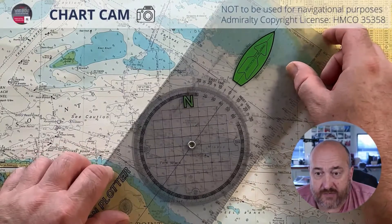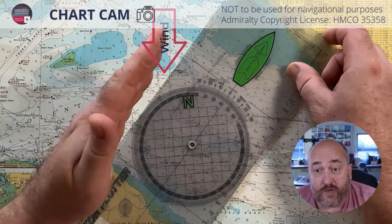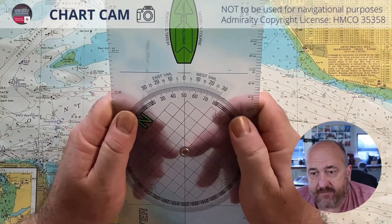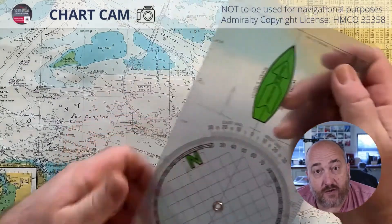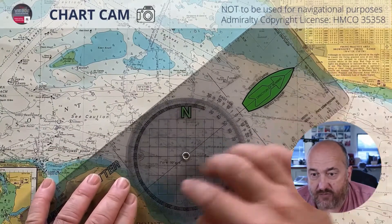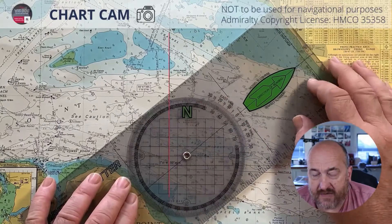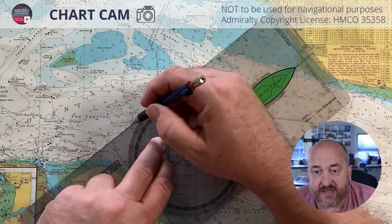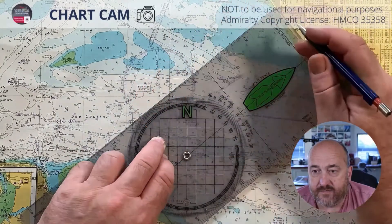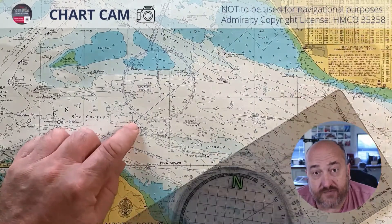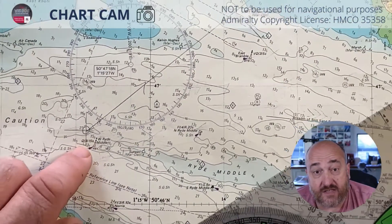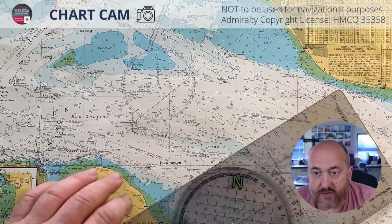So if we assume we've got a heading of 041 and wind giving us leeway of 10 degrees, we're going to put the leeway on at the beginning this time. So 051 is going to be our water track. We line up our compass rose on the Breton plotter with the meridian line, and then we draw a line from our previous fix. We put one arrow on it to show that it's our water track.